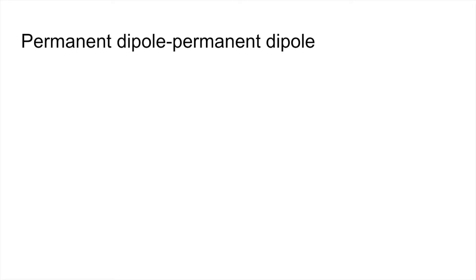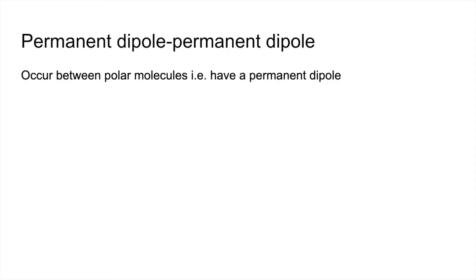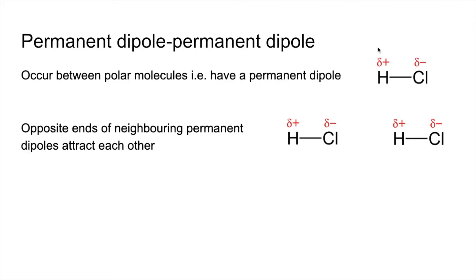Moving on to permanent dipole-permanent dipole forces. These occur between polar molecules — molecules that have a permanent dipole. An example is HCl, hydrogen chloride. There's a permanent dipole in the molecule because chlorine is more electronegative than hydrogen, so chlorine is slightly negative and hydrogen is slightly positive.